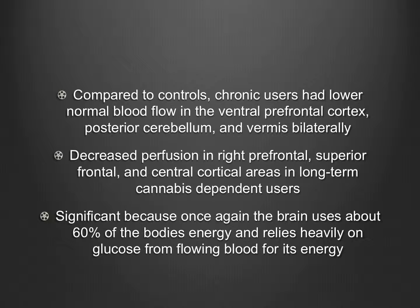Compared to controls, chronic users had lower normal blood flow in the ventral prefrontal cortex, posterior cerebellum, and vermis bilaterally. Decreased perfusion in the right prefrontal, superior frontal, and central cortical areas was also seen in long-term cannabis-dependent users. This is significant because the brain uses about 60% of the body's energy and relies heavily on glucose from flowing blood. By affecting the rate of perfusion and the rate at which glucose can be used for energy in the brain, there are going to be unknown effects on neuronal activity.